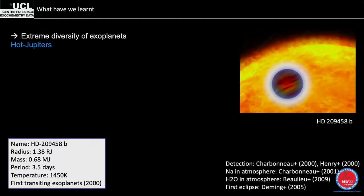For hot Jupiter examples, HD 209458b was the first transiting exoplanet detected in 2000. It's 1.38 Jupiter radii, orbits in 3.5 days, and has a temperature of about 1,500 Kelvin. KLT 11b is also big at 1.37 Jupiter radii but has a mass of only 0.2 Jupiter masses — what the press calls a 'super-puff' — with very low density that is difficult to explain theoretically.